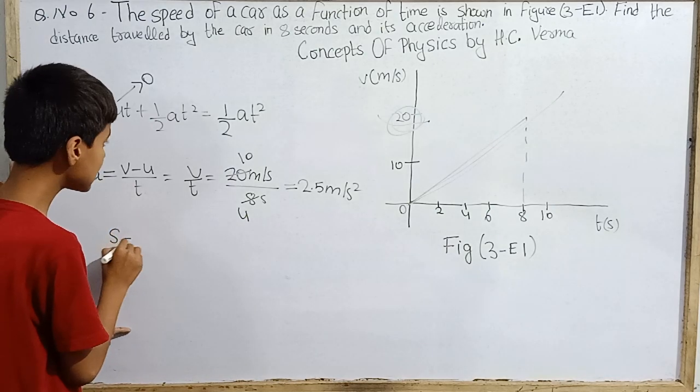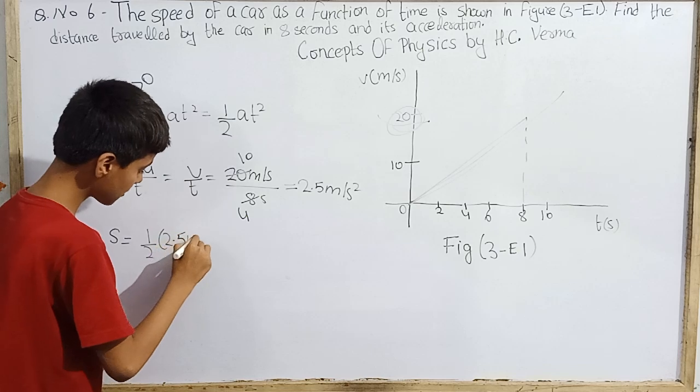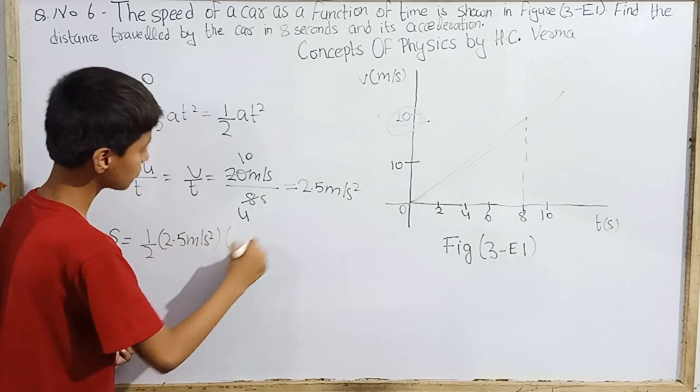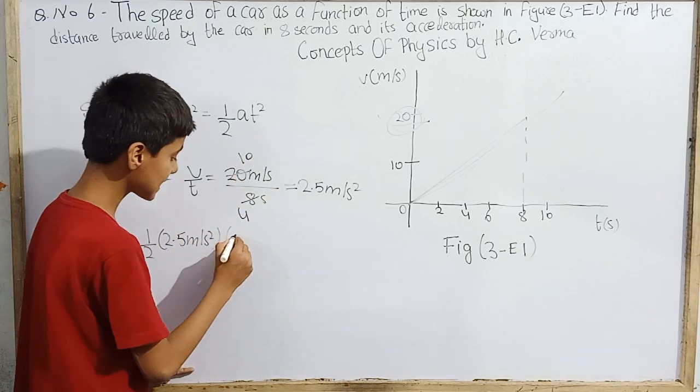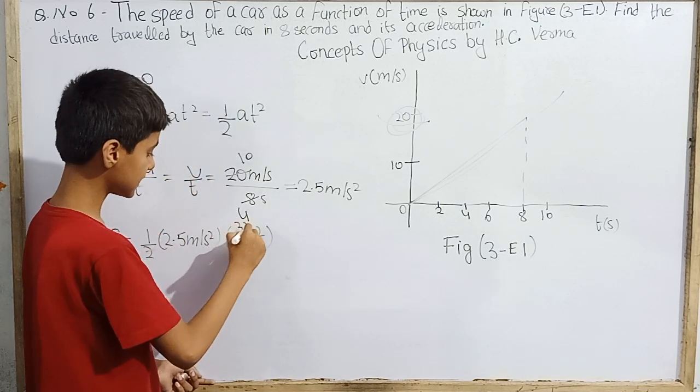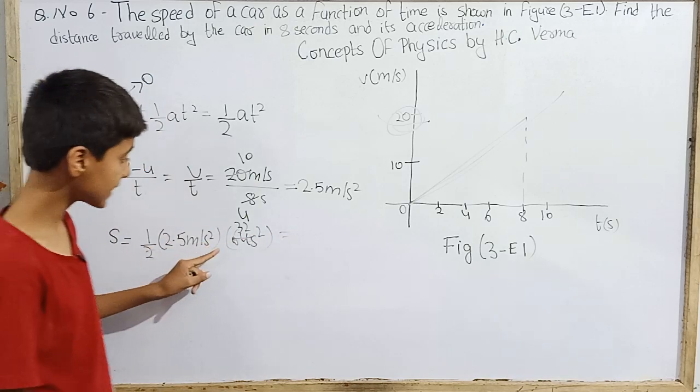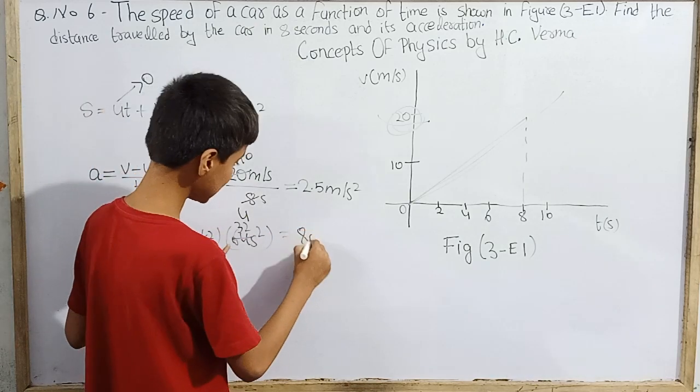I know acceleration is 2.5 meter per second square, so s equals half into 2.5 meter per second square into t square, and 8 second square is 64 second square. This is 32, and then we can multiply 32 and 2.5, so we are getting 80 meter.